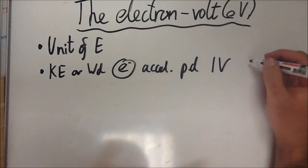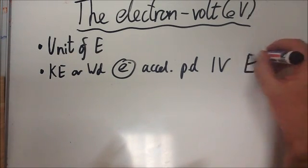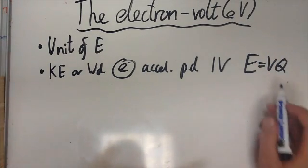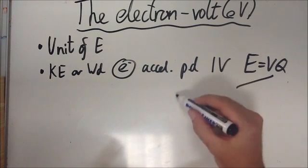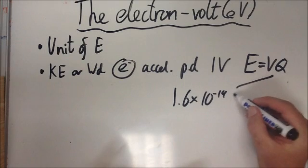Now from GCSE and some of Unit 2 A Level you may be familiar with the equation energy equals voltage times charge. The charge here in this case is the charge on an electron which is 1.6 times 10 to the minus 19 coulombs.